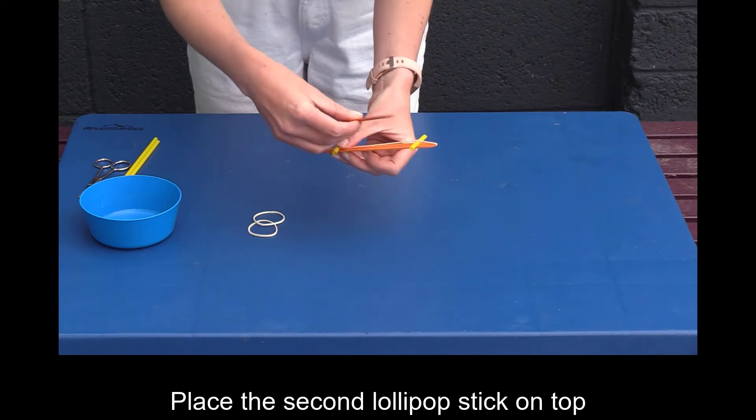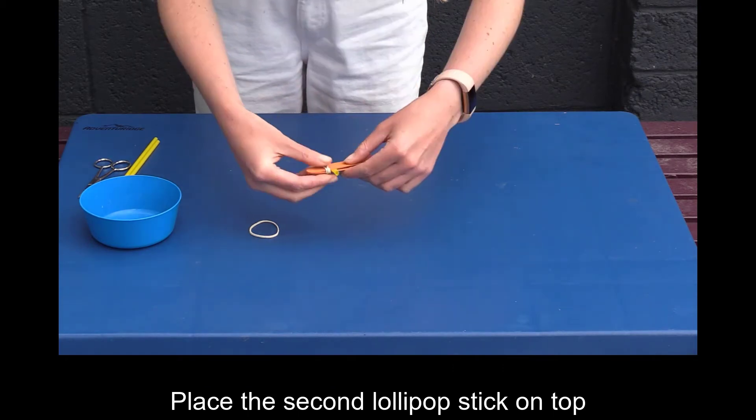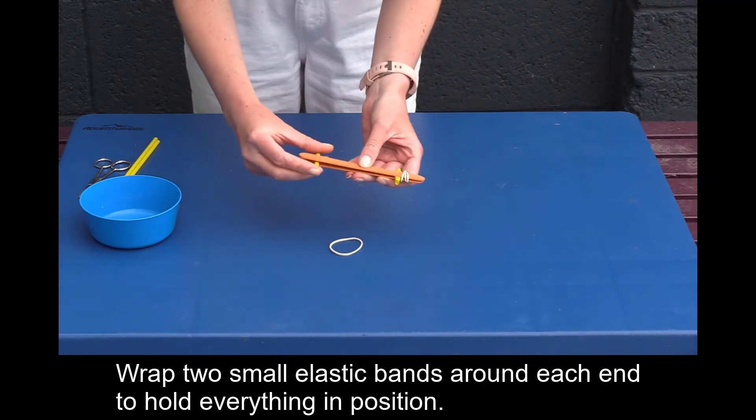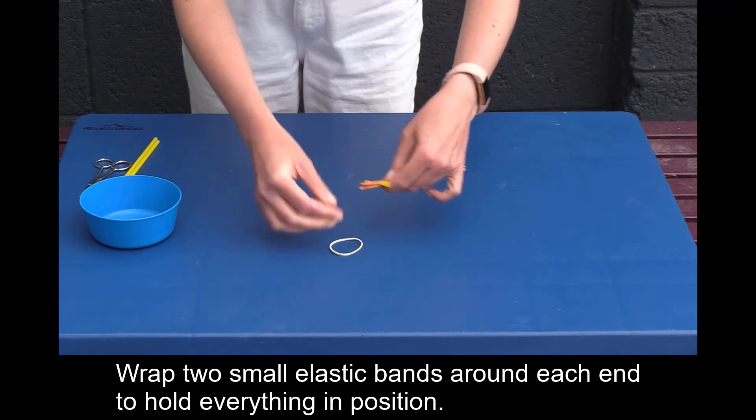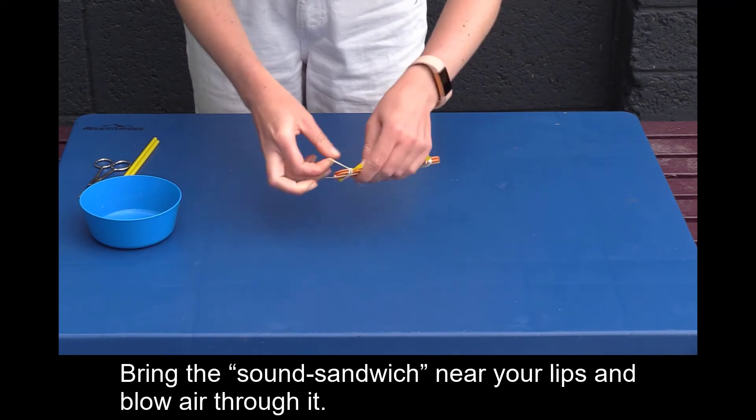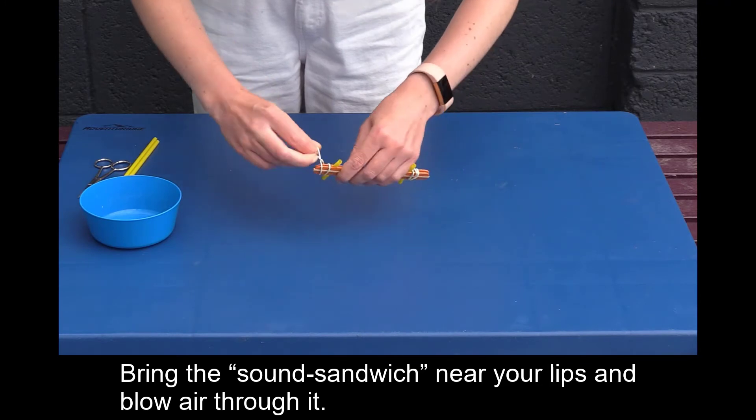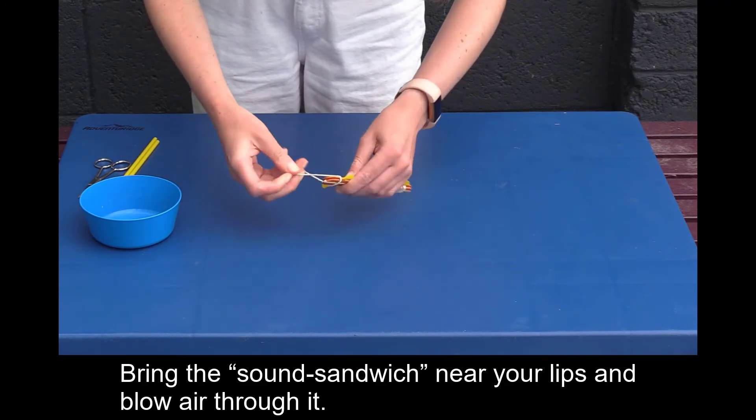Place one straw under the elastic band near one end and the other straw above the elastic band at the other end. Place the second lollipop stick on top. Wrap two small elastic bands around each end to hold everything in position. Bring the sound sandwich near your lips and blow air through it.